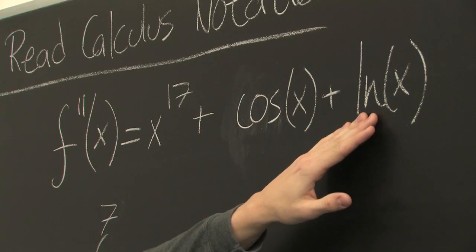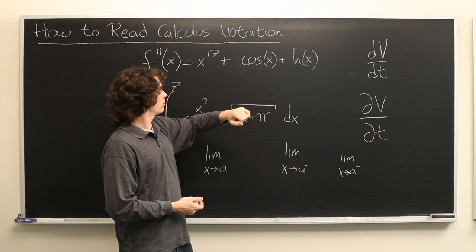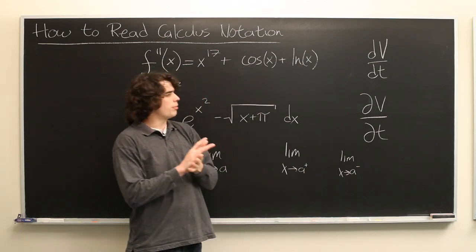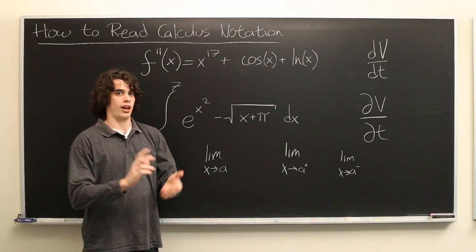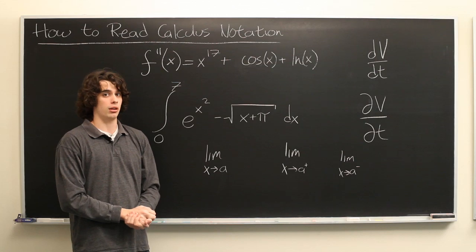And here we have ln of x, also referred to as the natural log of x. Occasionally, you will hear this simply referred to as the log of x, though you need to be careful with the phrase log of x because that can have several different meanings depending on which context you're using it in.